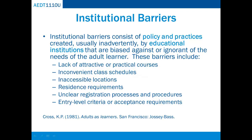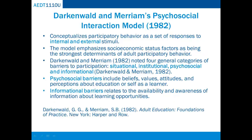Institutional barriers consist of policies and practices created, usually inadvertently, by educational institutions that are biased against or ignorant of the needs of adult learners. These barriers can include lack of attractive or practical courses, inconvenient class schedules, inaccessible locations, residence requirements, unclear registration processes and procedures, and entry level criteria or acceptance requirements.